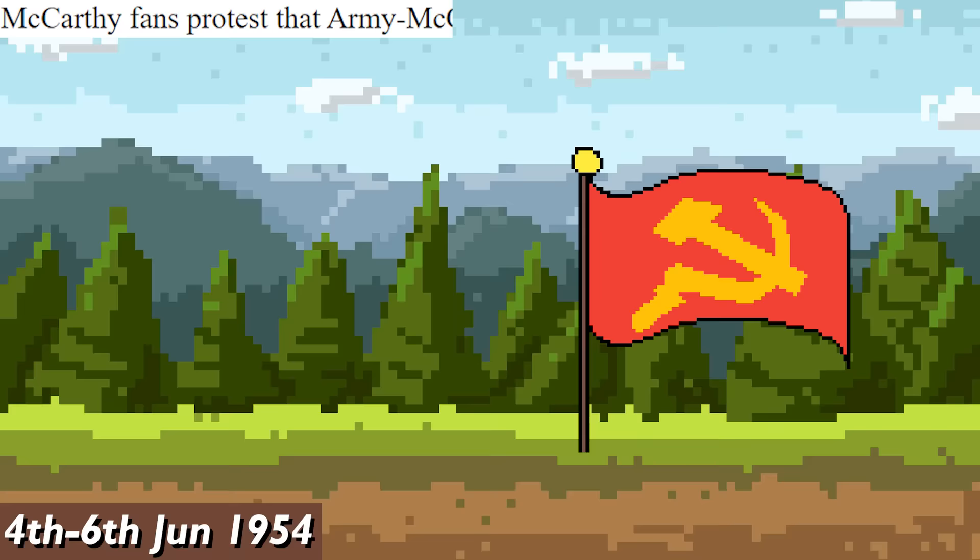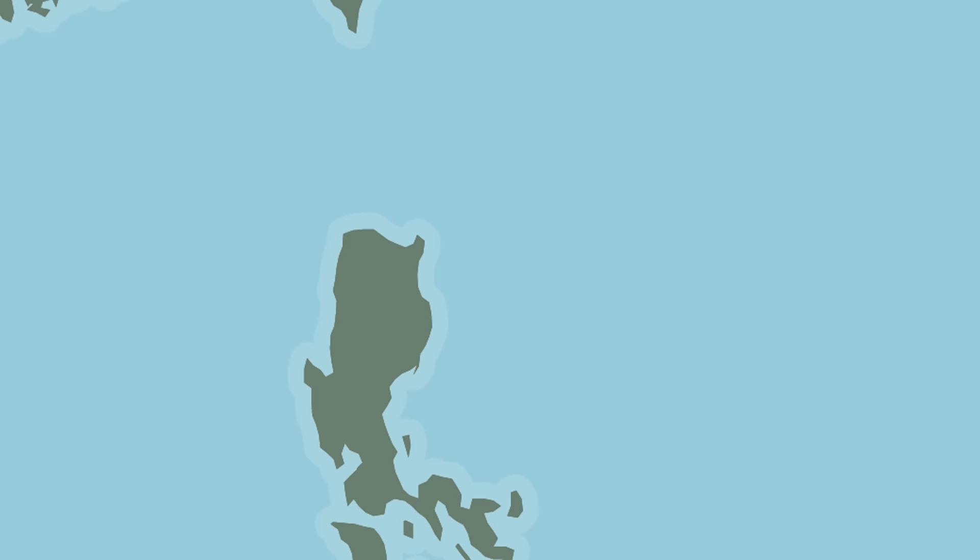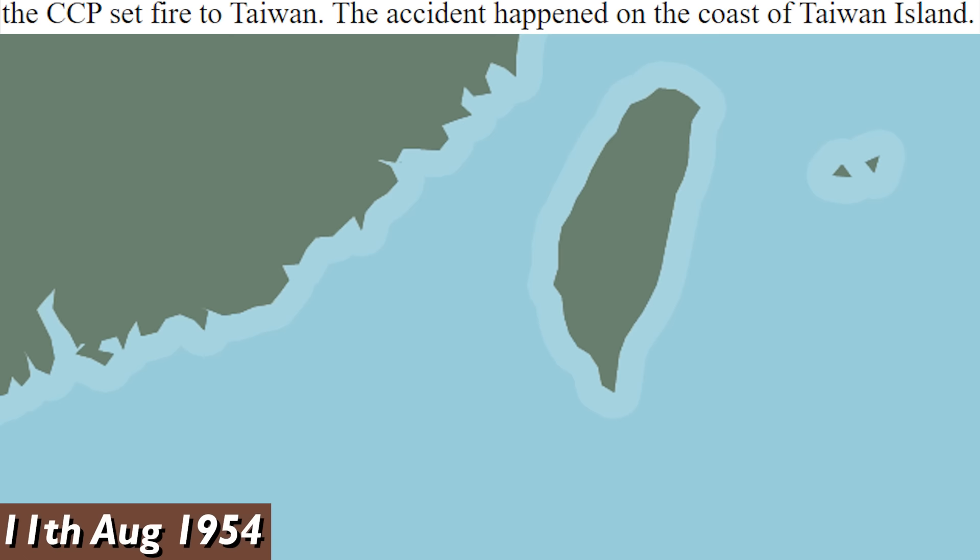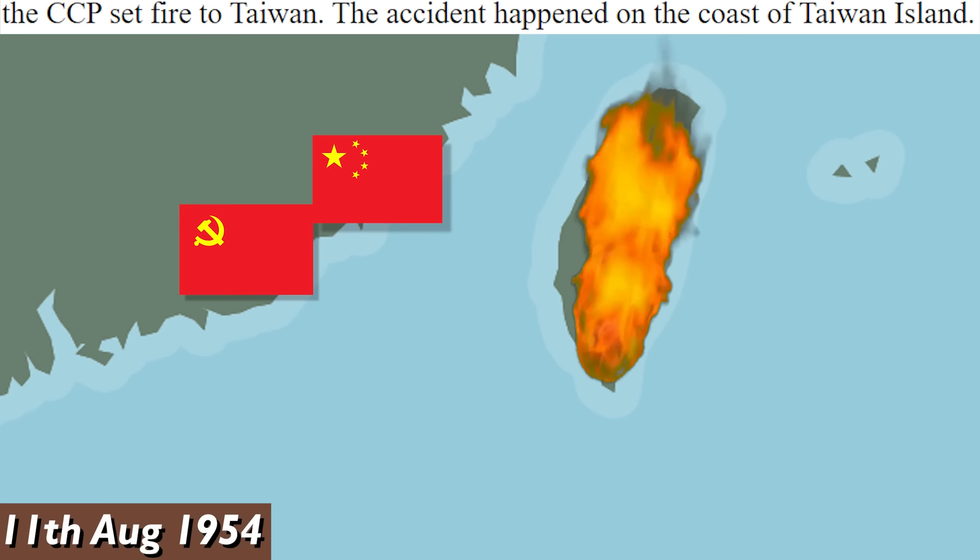1954. April to June: McCarthy fans protest the army. McCarthy game should be televised in the US. Let me play McCarthy game, please. On May 17th, Hezbollah takes control of the Philippines. On August 11th, the CCP set fire to Taiwan. The accident happened on the coast of Taiwan Island. The accident. Oopsies.